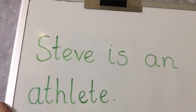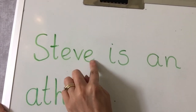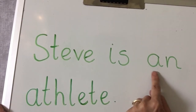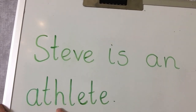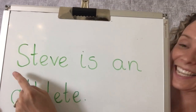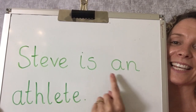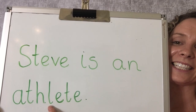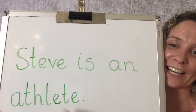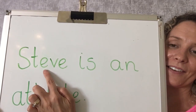We heard about Steve Ovette, a famous Olympic runner. We heard about Pete Reed, a famous Olympic rower. And we heard about Eve Muirhead, a famous Olympic curler. Have a go at reading this sentence about one of the athletes. It's Steve — Steve is an athlete. You can see the split digraph E here and the split digraph E here. Well done.